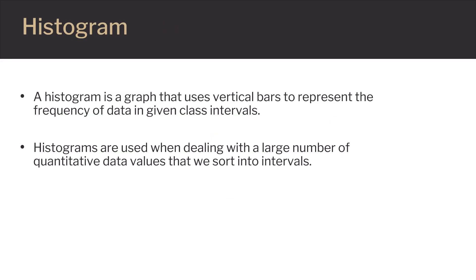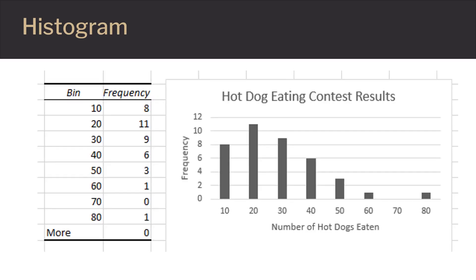Now that we have our frequency table, let's take a look at it graphically. We'll begin with a histogram. A histogram is a graph that uses vertical bars to represent the frequency of data in given class intervals. Histograms are usually used when dealing with a large number of quantitative data values that we can sort into intervals. To the right, we have our histogram. Along the horizontal axis we have our classes, and the vertical axis represents the frequency. If we look at any individual class, the height of the bar associated with that class indicates the frequency, or the number of data values for that class.